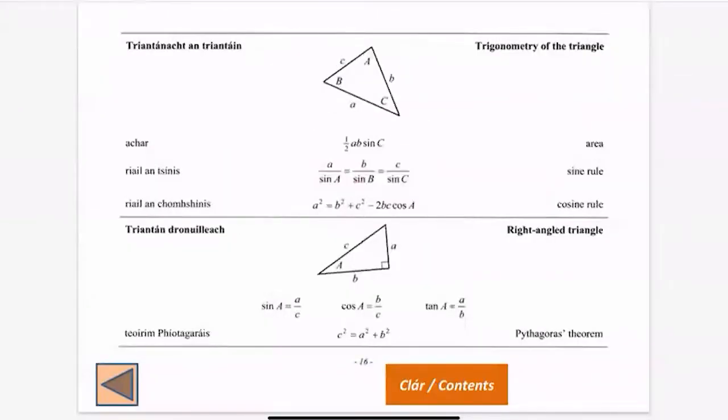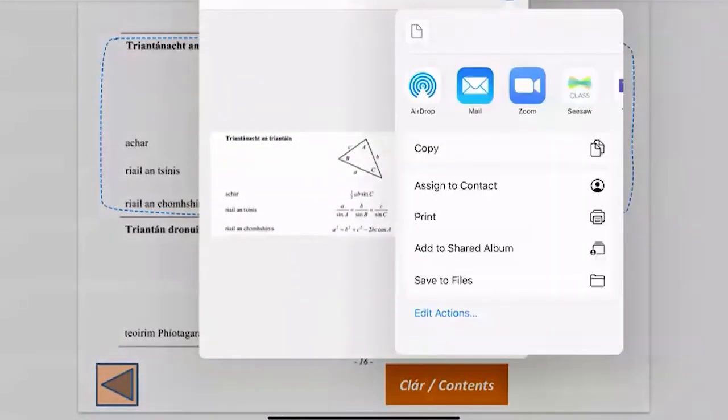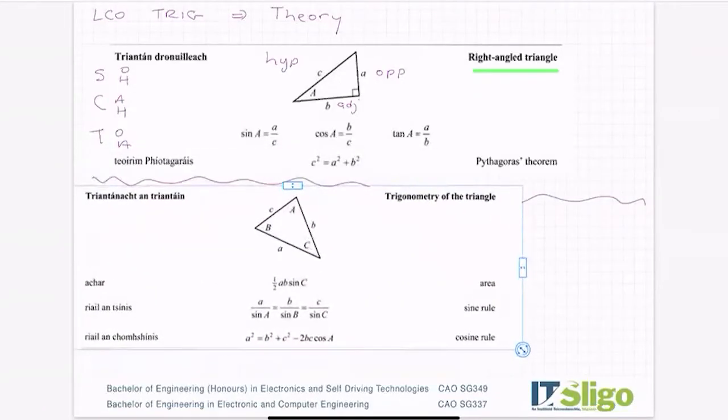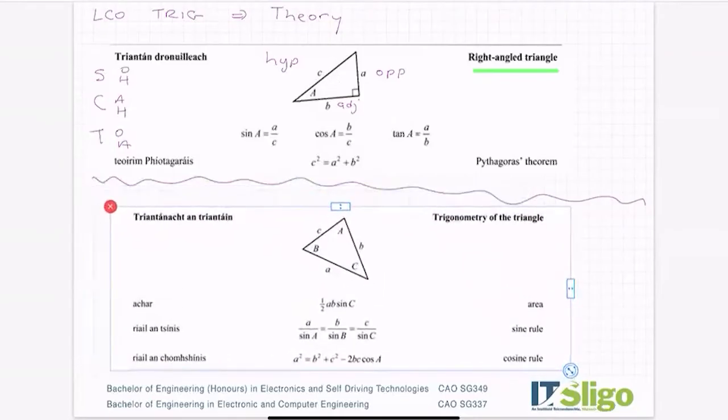Now what happens if the example that they give us is not a right angle? Well then we have this set of tools, which is a non-right angled triangle. Again labeled in a similar way to the right angled one, the sides are ABC. What you have to see is that side A is always opposite angle A,